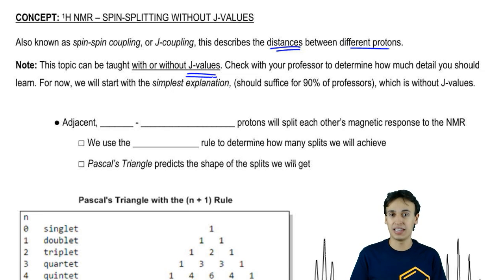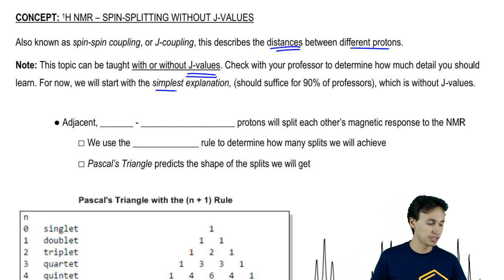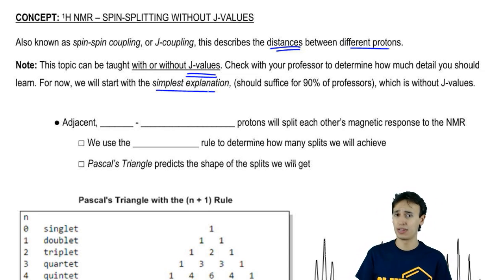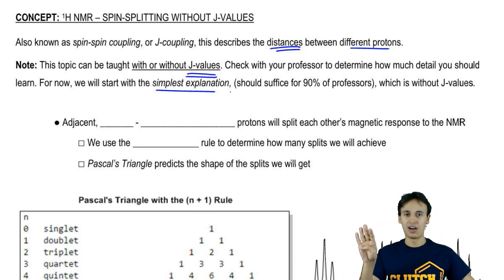J values are the thing that complicates the spin-splitting concept a lot. I've been teaching organic chemistry for a long time and the explanation without J values, which is the simplest explanation, works for about 9 out of 10 of my classrooms. Most likely, you're in one of those classrooms where you don't really need to learn a rigorous explanation of J values. If your professor goes deep into J values and starts talking about how to draw a tree diagram, that's where you're going to want to watch the second video.